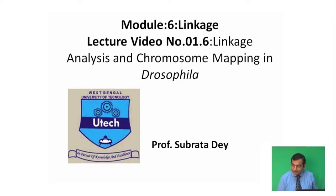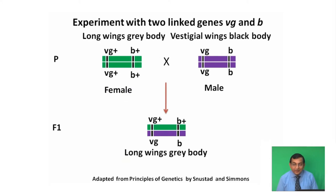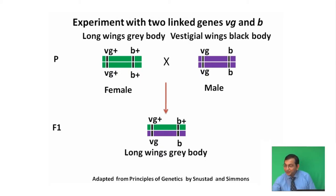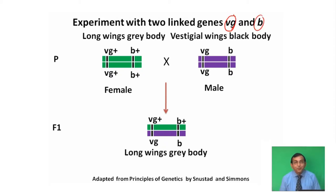This linkage can be proved with the help of an experiment with Drosophila. Here we have done one experiment with two linked traits: vestigial, that is short wing, and black, that is black body color and vestigial wing, that is short wing, against the normal or wild type, that is long wing and grey body color.